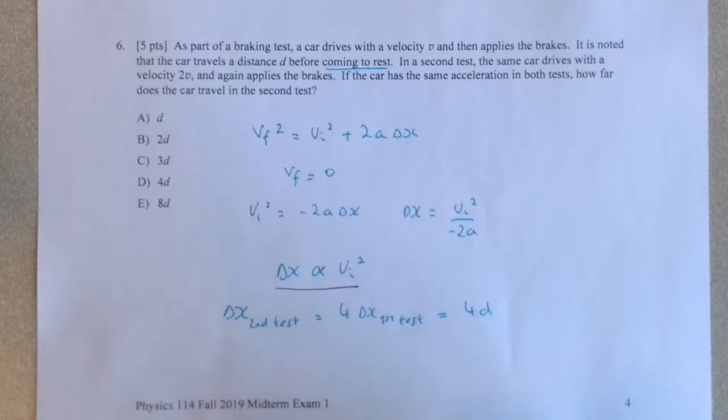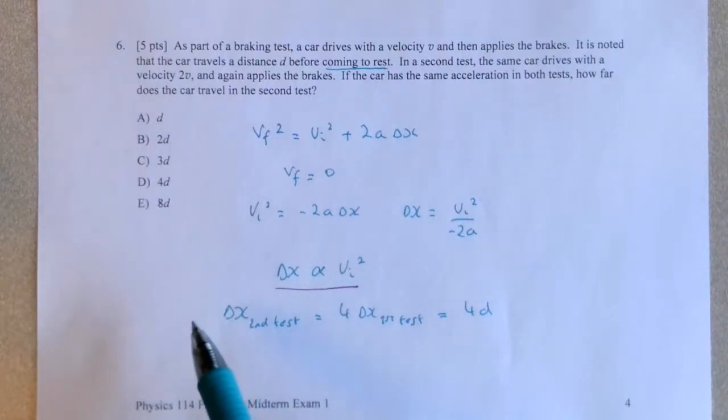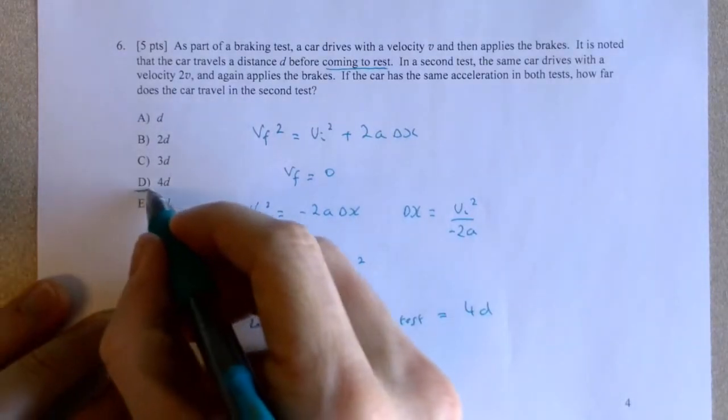Which is very important to consider when driving. Doubling the speed does not double the braking distance but actually quadruples the braking distance, assuming that the acceleration of the car is constant. So choice D is the correct answer.